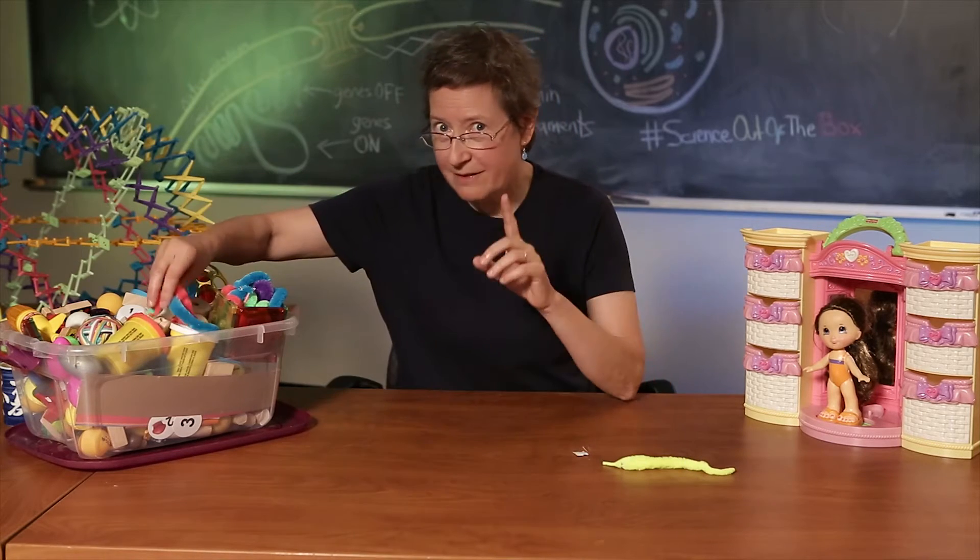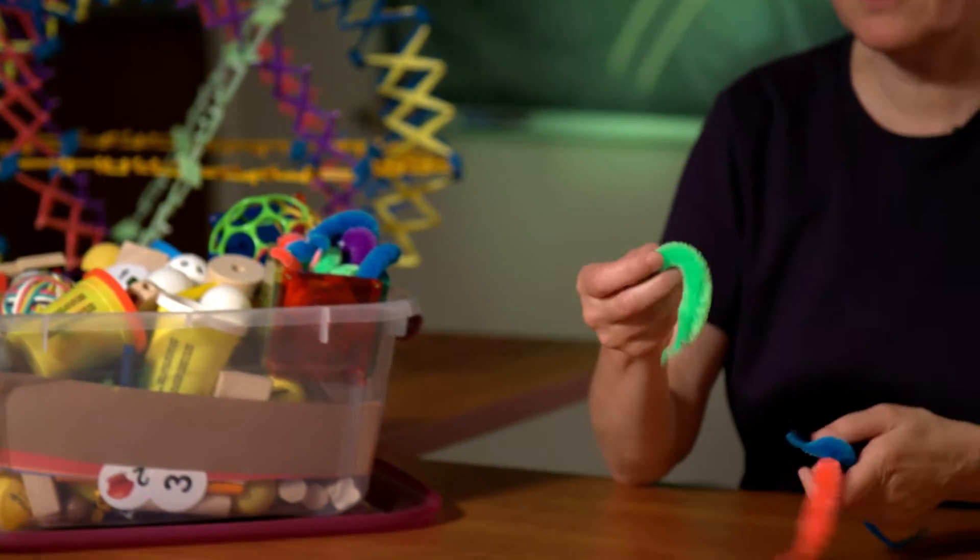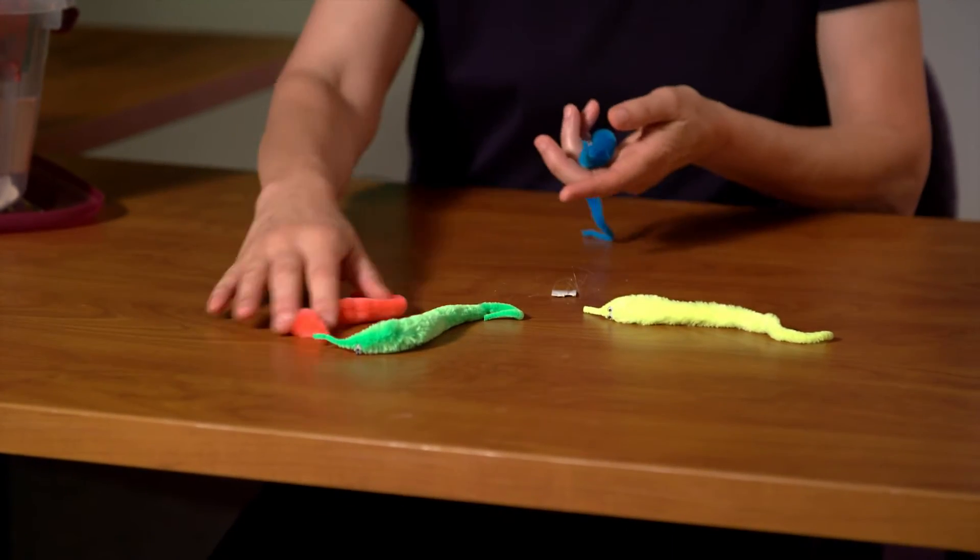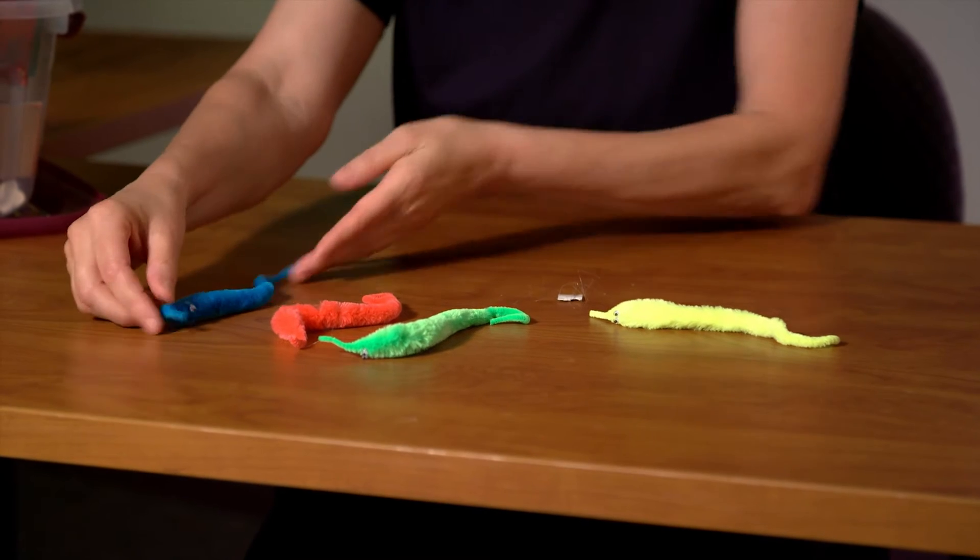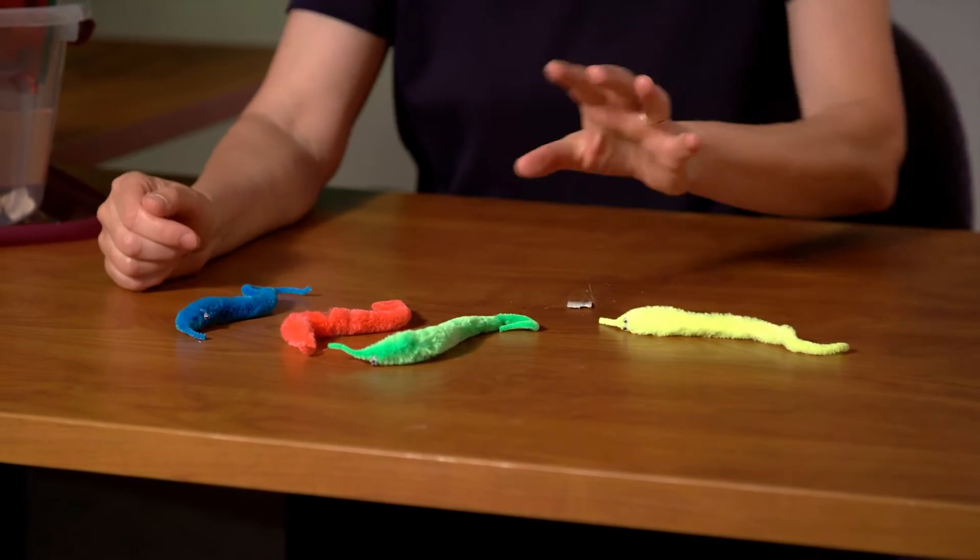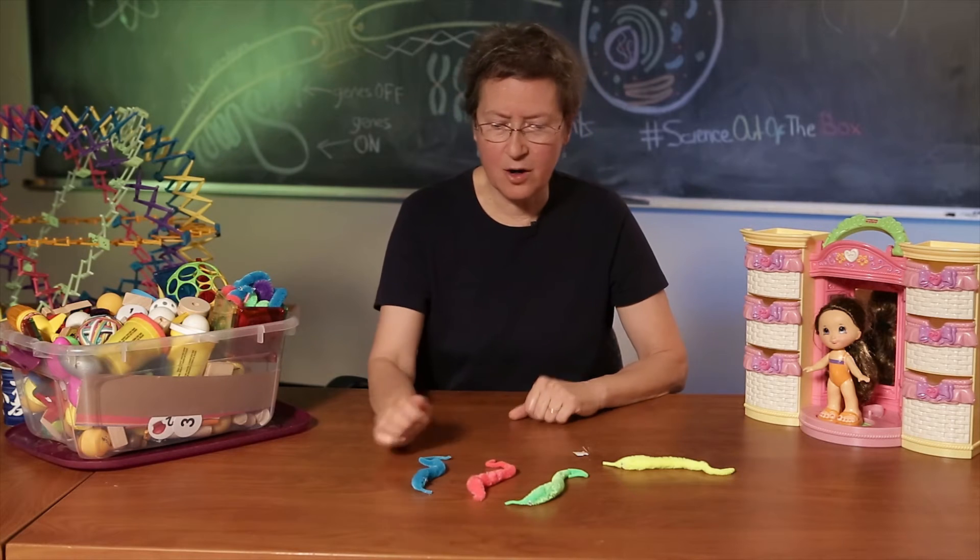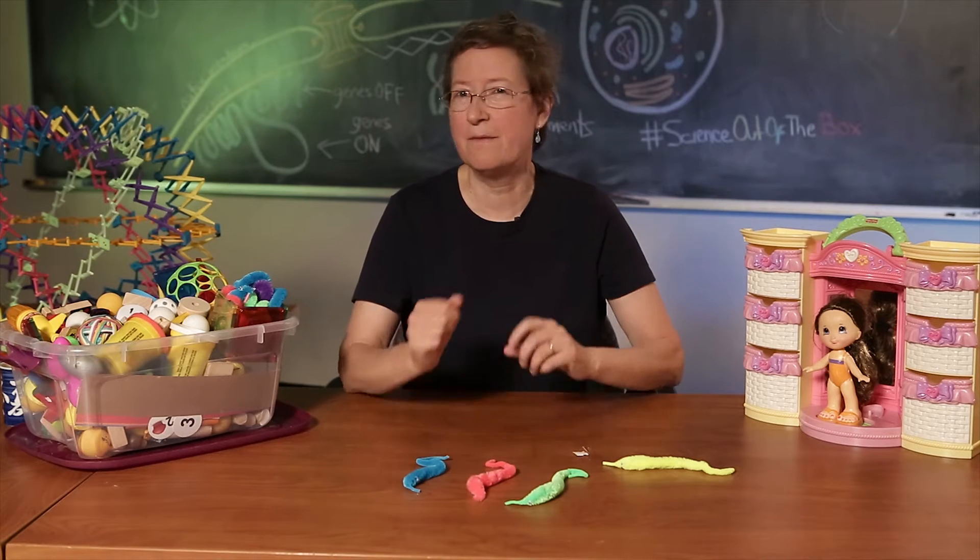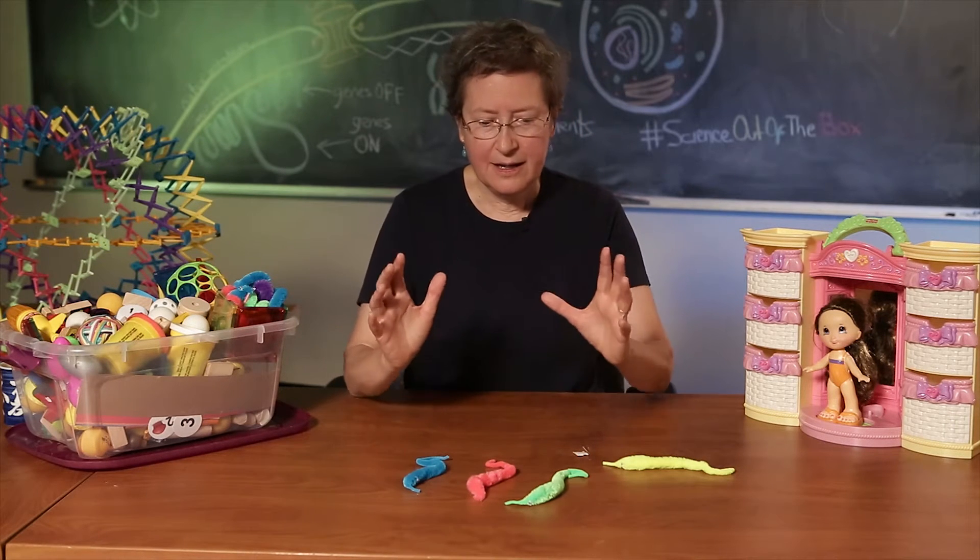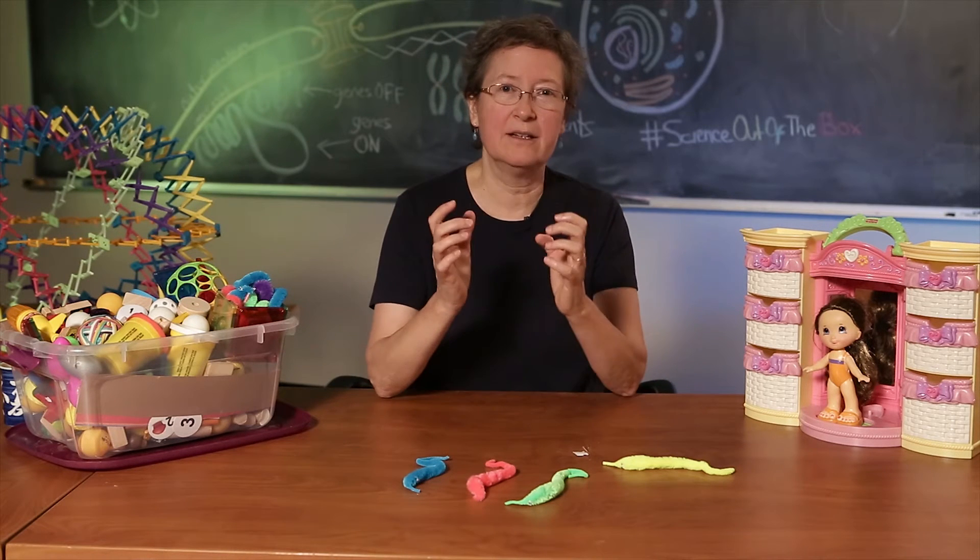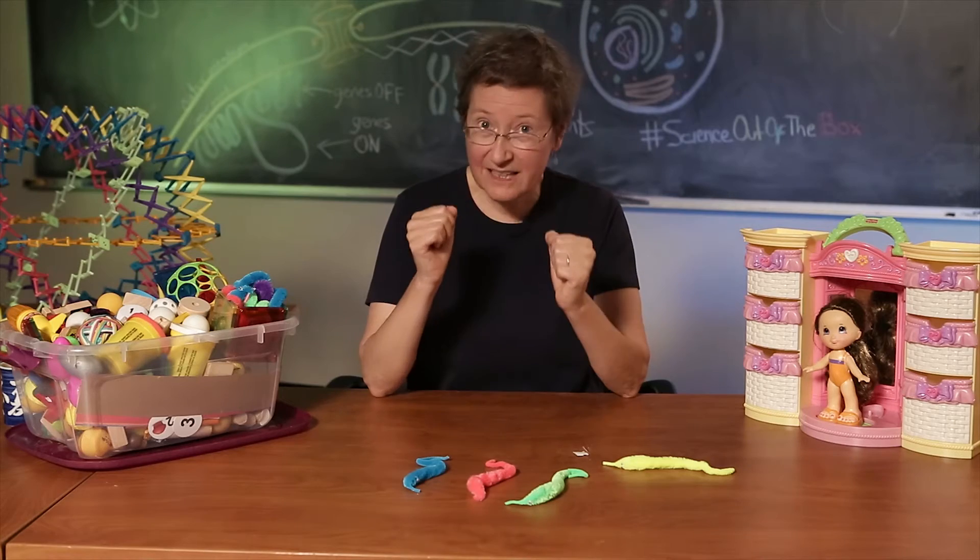But we also have a lot of very special cell types. We have skin cells, heart cells, brain cells. And the genes that code for the skin proteins and the heart proteins and the brain proteins are very different from each other. And you want those proteins only to be on, to be expressed in the right kind of cell, and to be off, not expressed in the other cell types.